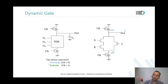When you want to evaluate the output of A, B, and C of this combinational gate when their values are fixed, then Clk goes to one. The PMOS turns off, the NMOS turns on, and you evaluate the dynamic gate.